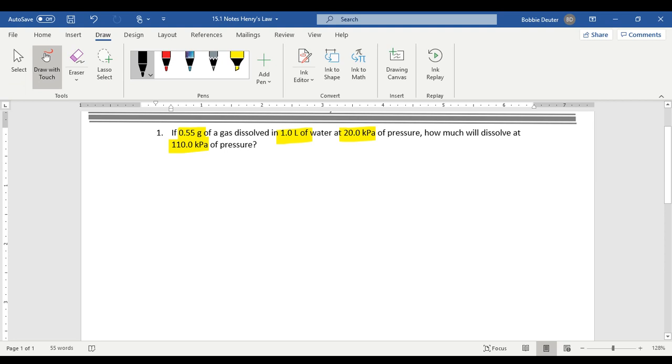So we know that our S1 is equal to 0.55 grams per liter of solution. We have, and we know that we have, by the way, the reason I got that is I took 0.55 grams divided by one liter of solution.